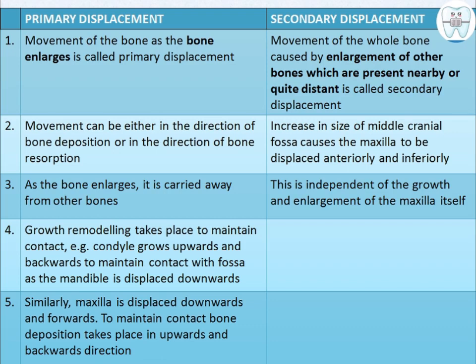As the bone enlarges, it is carried away from other bones. Growth remodeling takes place to maintain contact. For example, when the mandible is displaced downwards, the condyle grows upward and backward to maintain contact with the fossa. Similarly, when the maxilla is displaced downwards and forwards, bone deposition takes place in the upward and backward direction to maintain contact.